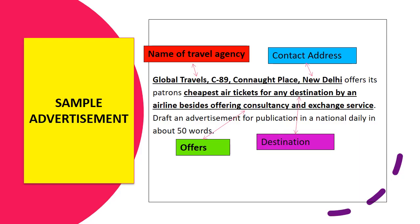Once again, let us see the points which are given in the question. Global Travels — it is the name of the travel agency. C-89, Connaught Place, New Delhi — the contact address has also been provided. Patrons means regular customers. The offers are: cheapest air tickets for any destination by any airline, along with consultancy and exchange service. These are the offers provided by the travel agency, and you have to write this advertisement.